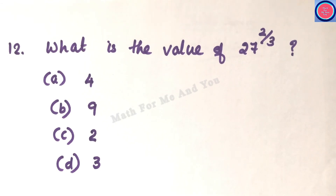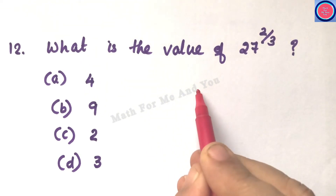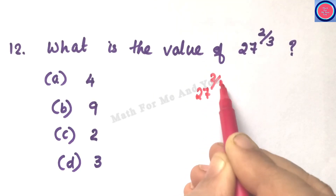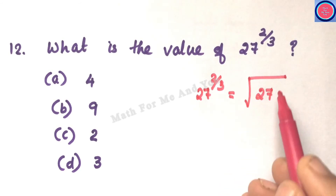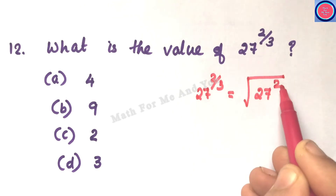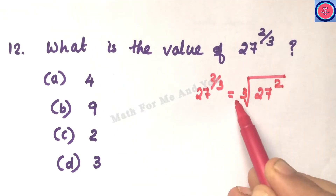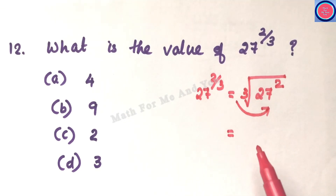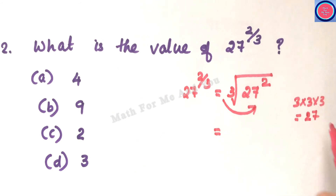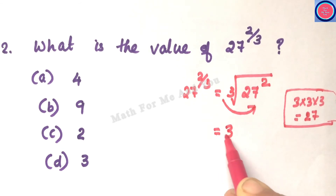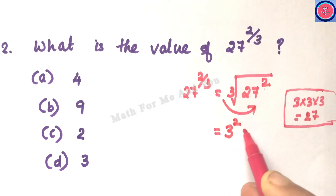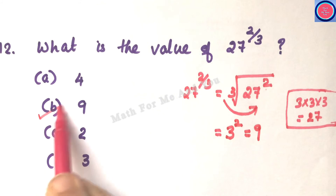Q12: What is the value of 27^(2/3)? Convert to radical form: 27^(2/3) = cube root of 27², i.e., the denominator 3 goes outside as the index and numerator 2 stays as the power inside. Cube root of 27 is 3 (since 3×3×3 = 27), and then 3² = 9. So the correct answer is option B, which is 9.